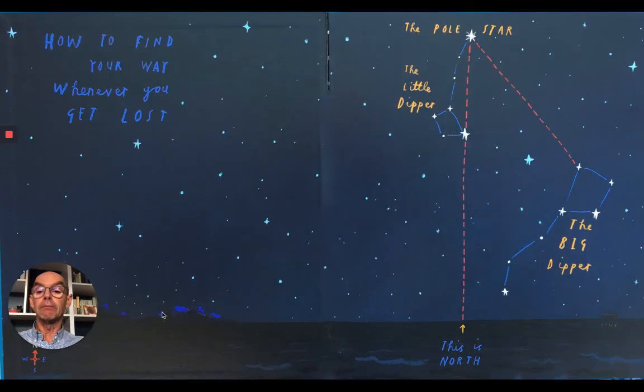Let's turn over. How to find your way whenever you get lost. You can see at the top of the page the pole star and next to it the little dipper and just on the bottom right the big dipper. It says this is north if you look for the pole star.